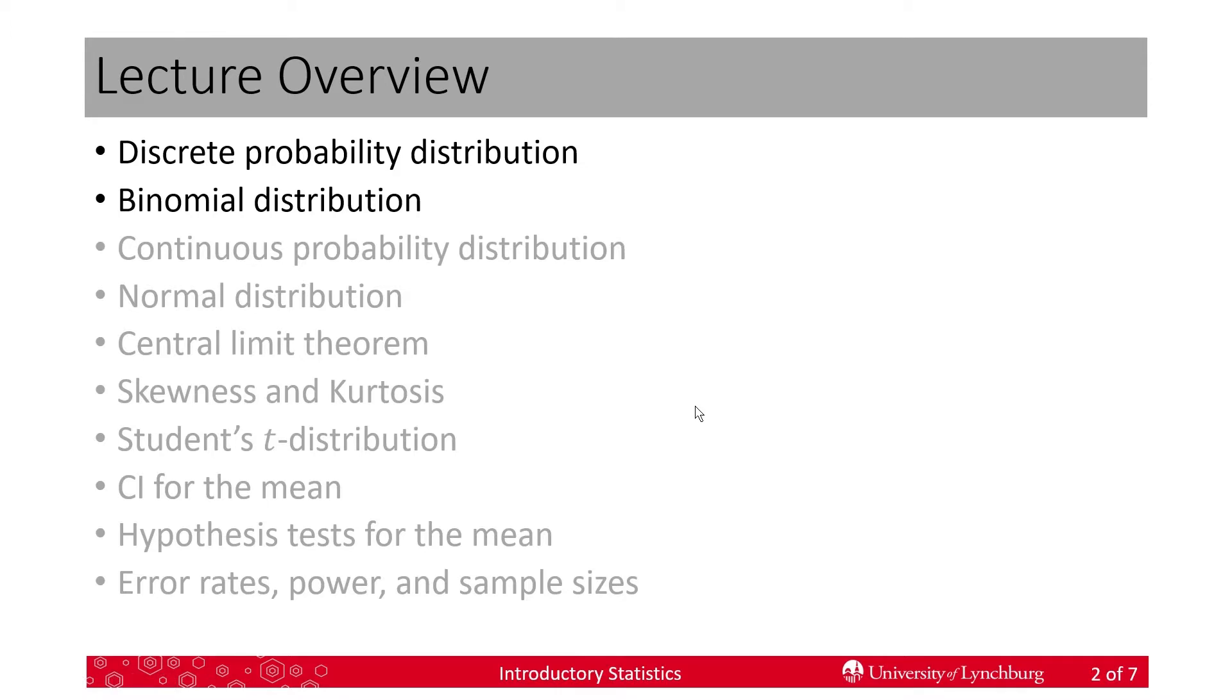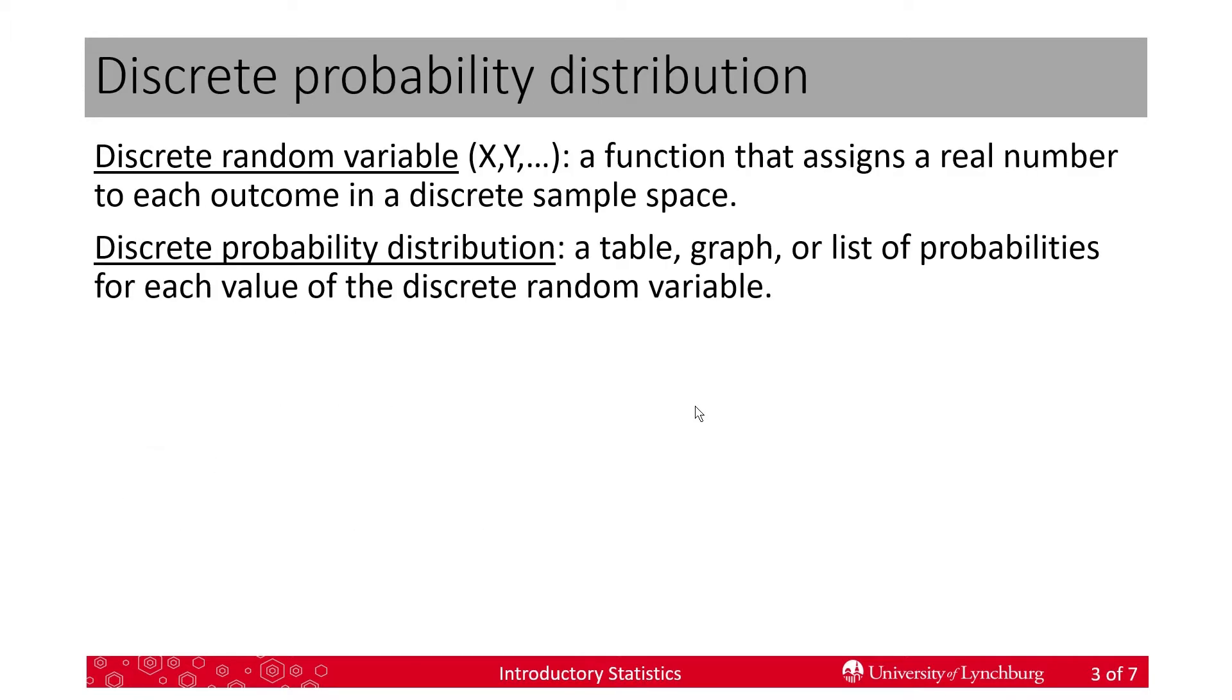In this video we're going to do discrete probability distributions and then talk about specifically the binomial distribution. First we want to define a discrete random variable. We use capital letters near the end of the alphabet, x, y. A random variable is a function that assigns a real number to each outcome in a discrete sample space. A discrete probability distribution can be written as a table, a graph, or just a list of the probabilities for each value of the discrete random variable.